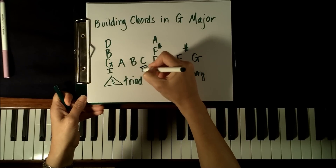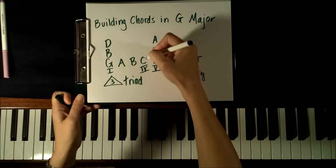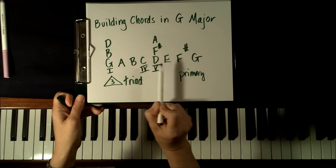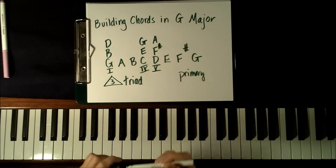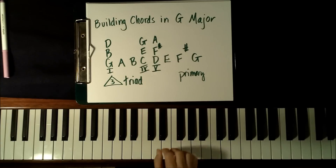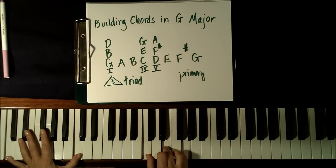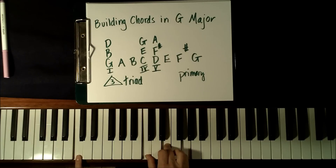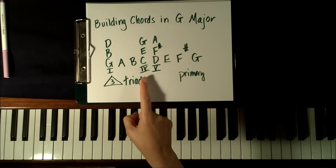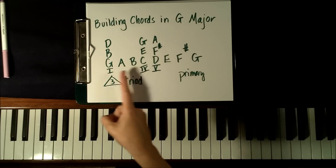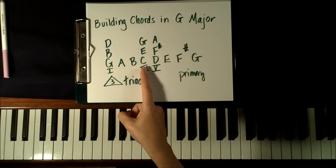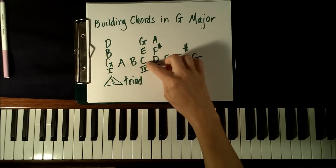Another primary chord in any major key is the IV chord. We're going to play the same pattern: C, skip a note, skip a note. So the IV chord in the key of G is the C major chord. We'll form it using the notes C, E, and G. This is the C chord. The C chord is the IV chord in the key of G major, and we call it the IV chord because it's built on the fourth note of the G scale: G, A, B, C — one, two, three, four. This is the fourth note, and we form the triad using C, E, and G.